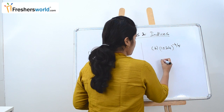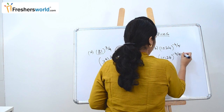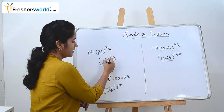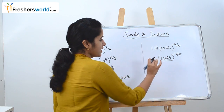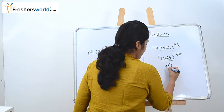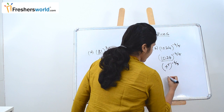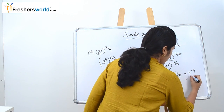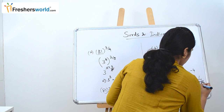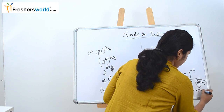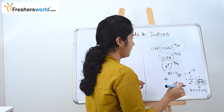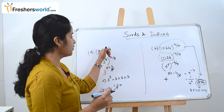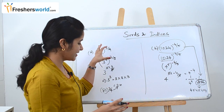Let's take another example: 1024^(−4/5). We know 1024 is nothing but 4^5. So we have (4^5)^(−4/5). Multiplying the powers: 5 × (−4/5) = −4, giving us 4^(−4), which is 1/4^4 = 1/256. So 1024^(−4/5) simplifies to 1/256. Once you see the question, find how the base can be expressed as a power that cancels with the given exponent.